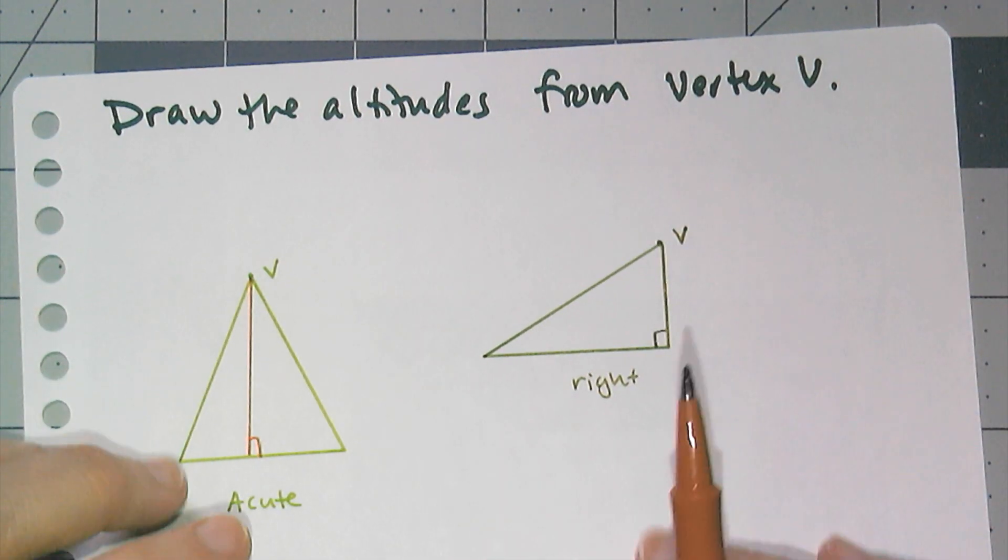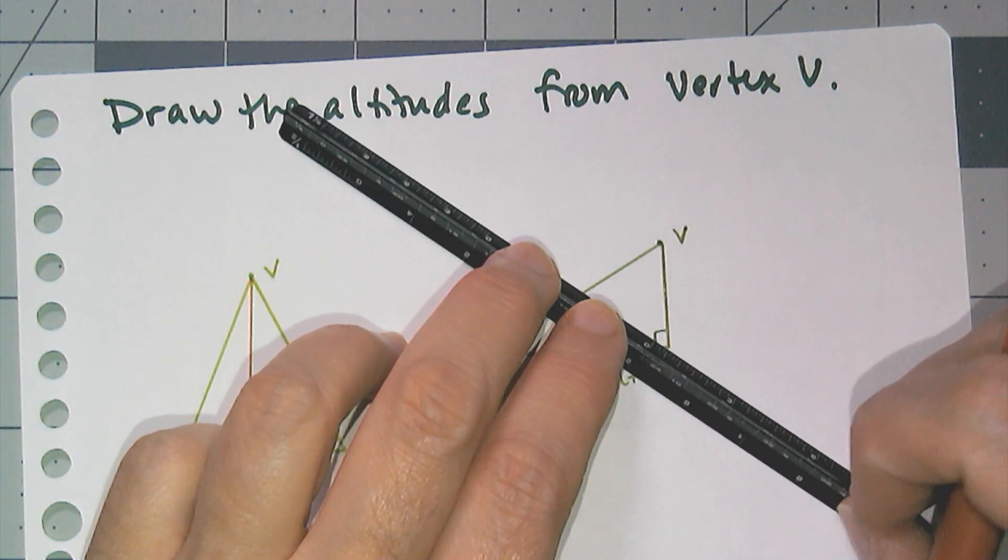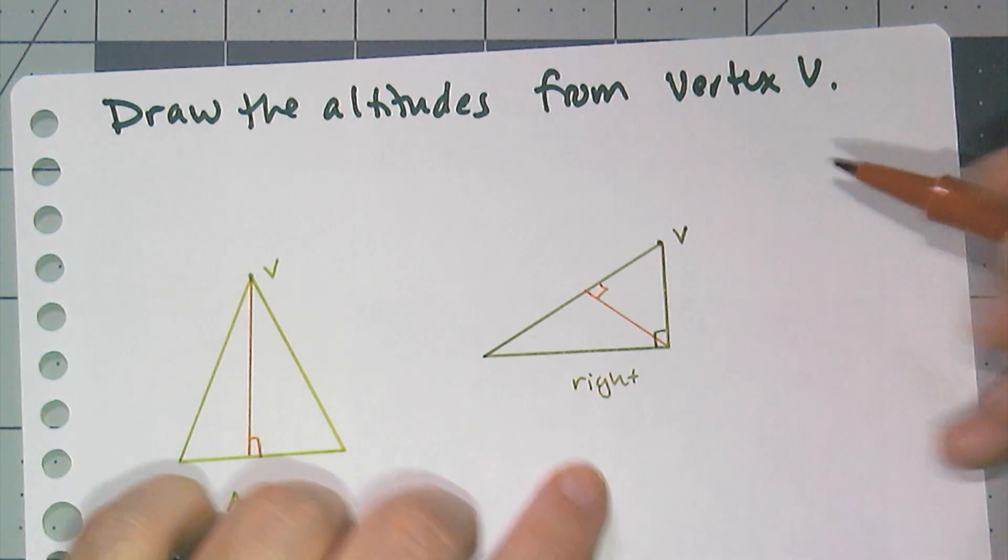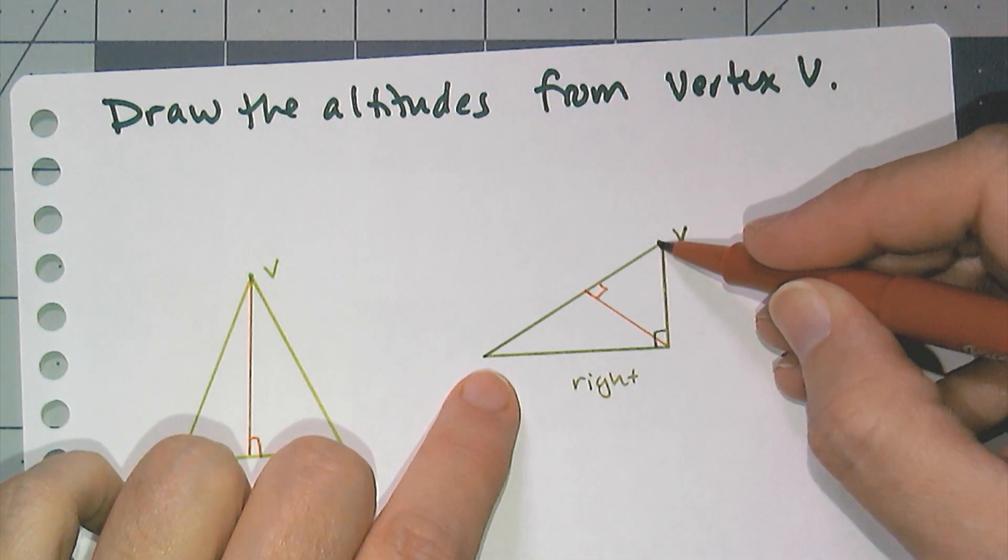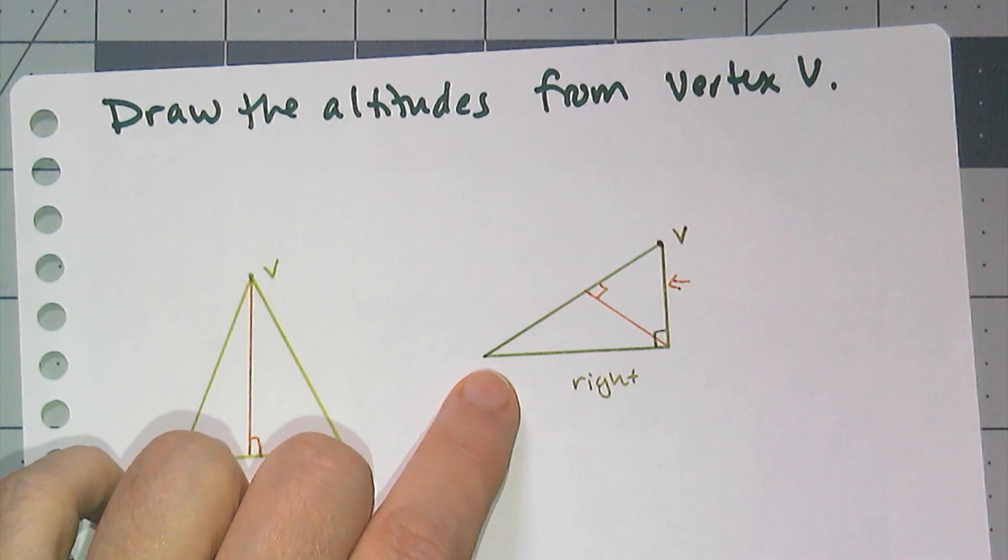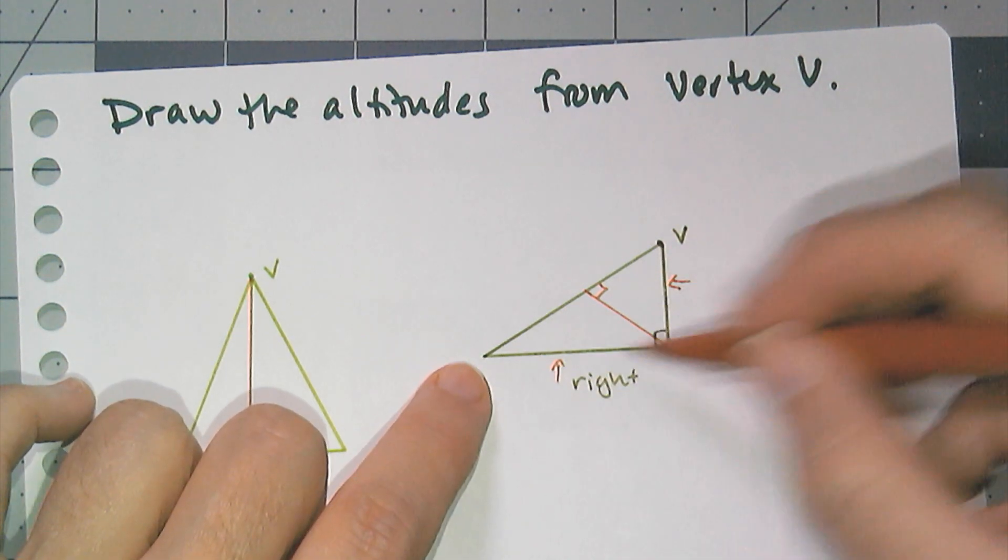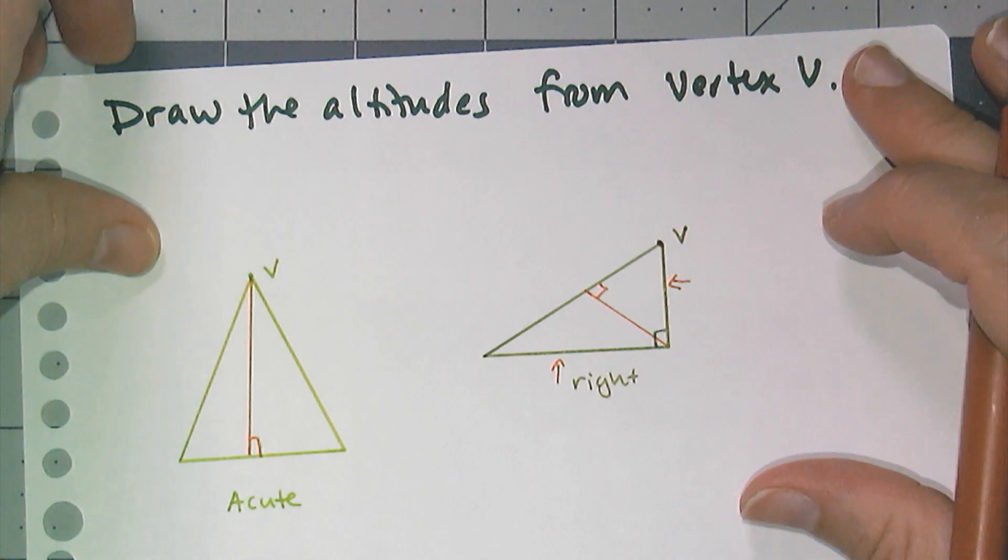And then I have a right triangle. The altitude from the right angle is going to hit the hypotenuse. But the altitude from one of the vertices that makes up a leg is actually going to be this side length of the right triangle. And this altitude here from this vertex is that side of the right triangle. Now those are ones you're super familiar with.